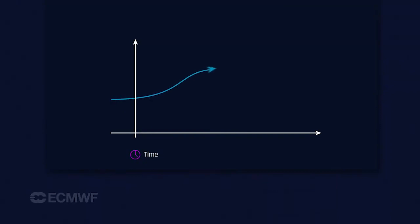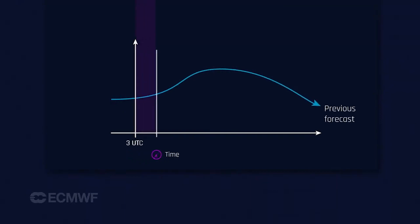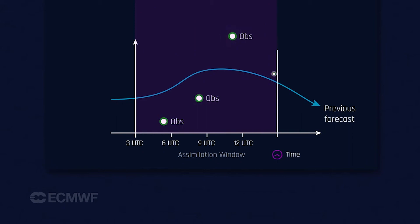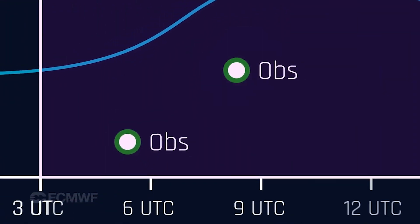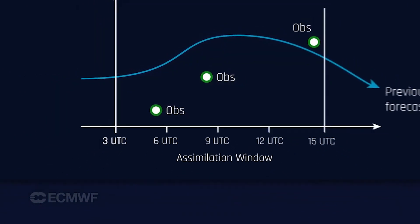It combines observations made in the past with today's weather model to deliver a complete and consistent picture of the past weather. We first run a short-range forecast and then wait until we receive all the observations within an assimilation window. Once we have received all the observations, we go back to the beginning of that window and adjust the previous forecasts. 4D-VAR is the only tool we can use to bring together these observations to build a consistent, physically reasonable state of the atmosphere. Hundreds of millions of observations need to be brought together in a consistent way, and 4D-VAR is the only system that can do that.